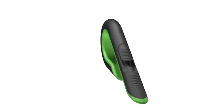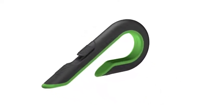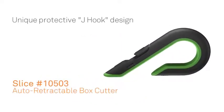This is the Slice 10503 auto-retractable box cutter with a Slice ceramic blade. It features a unique J-hook design that protects your hand while you're using it.